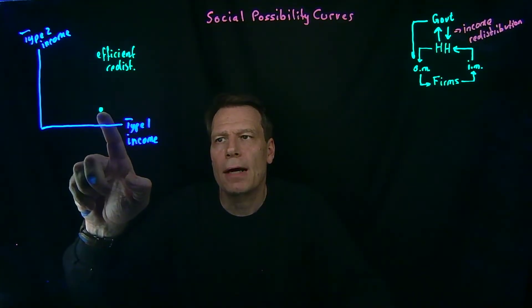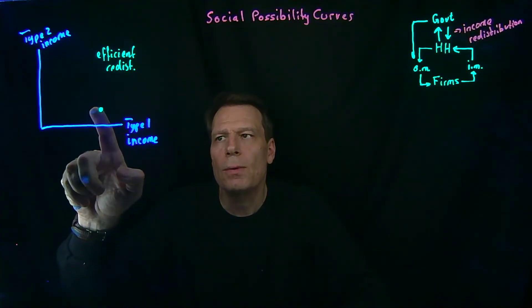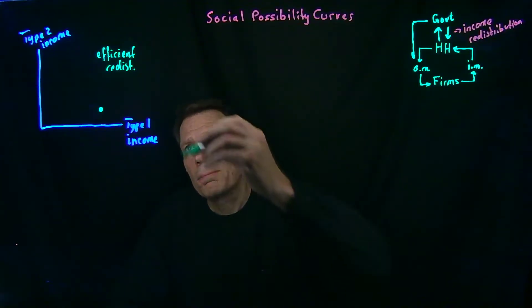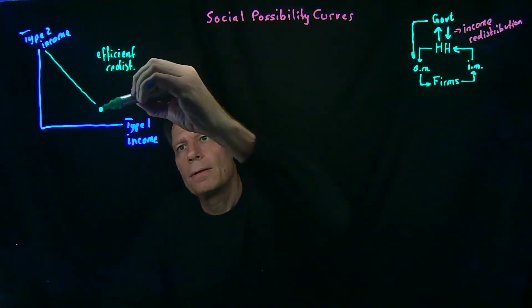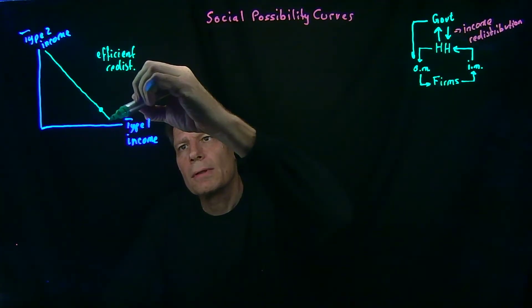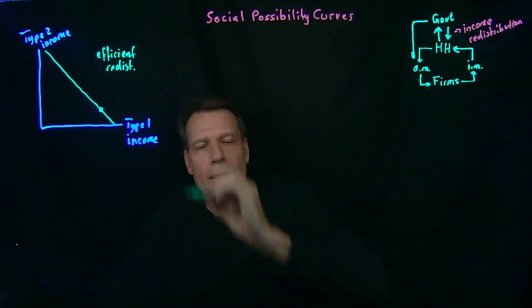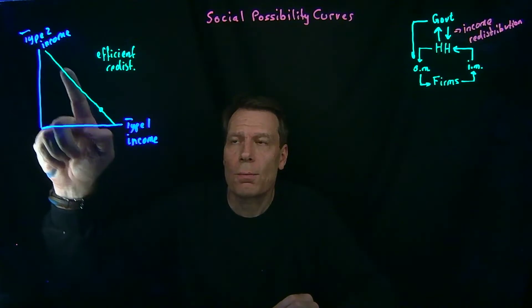Every time we take a dollar away from a type 1 person, we give that dollar to a type 2 person. And so we get a social possibility curve that's just a straight line going through the point that we would be at if we did nothing and has a slope of minus 1.